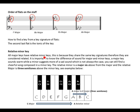How to find a key from a key signature of flats: the second last flat is the tonic of the key. So the second last flat is basically our key. For example, the second last flat here would be E flat — that's our tonic and our key. Similarly, the second last flat here would be A flat — that's our key.